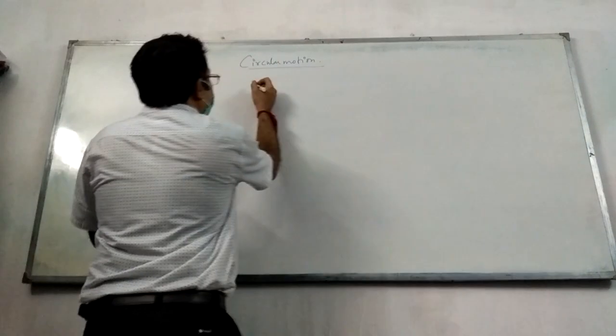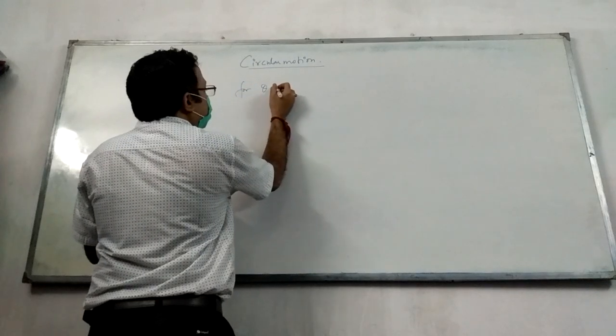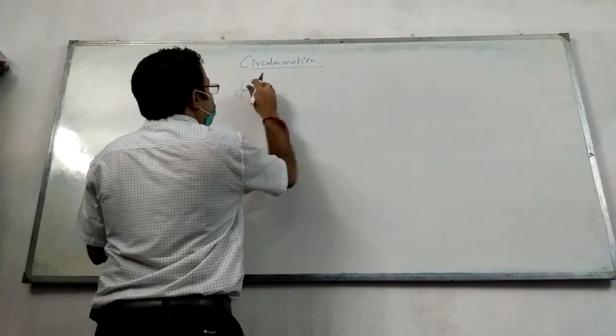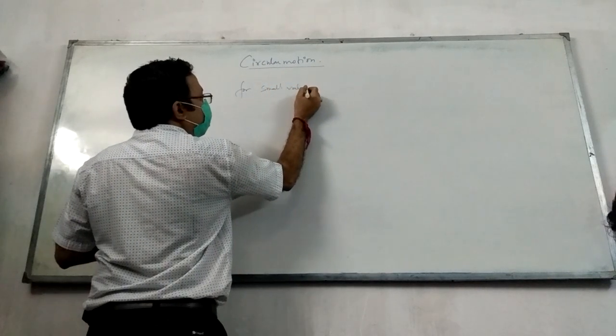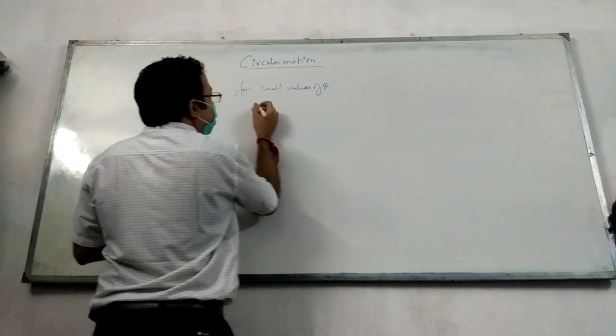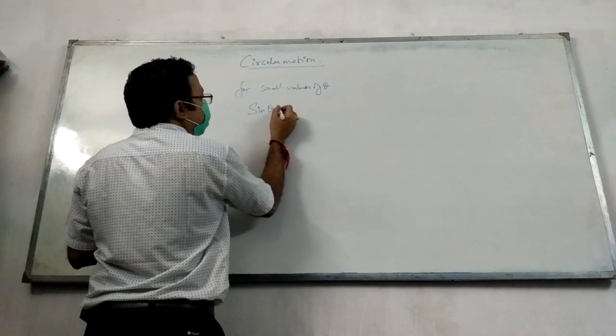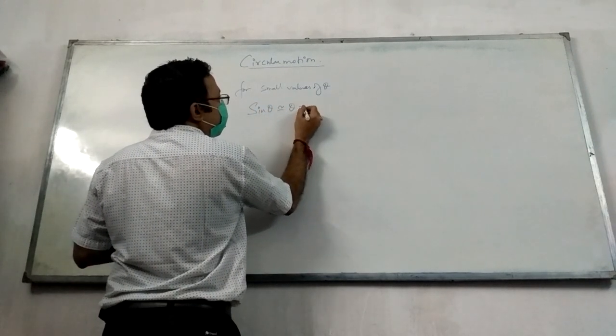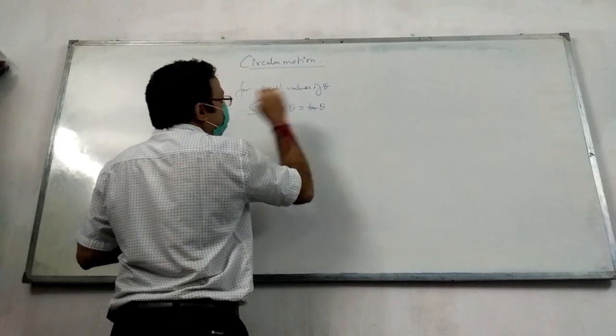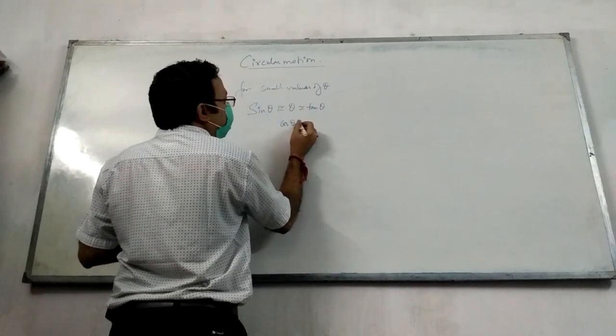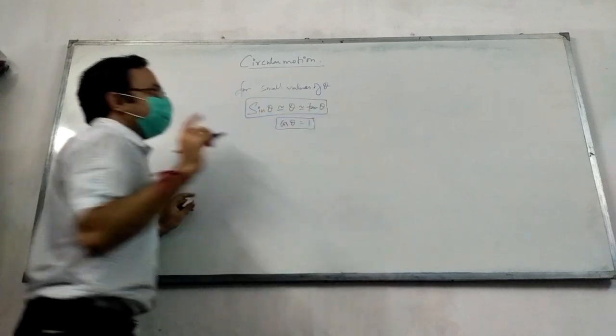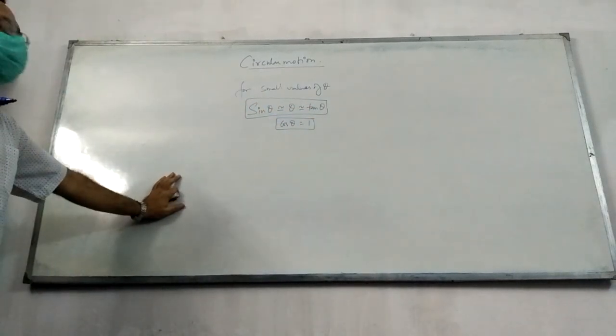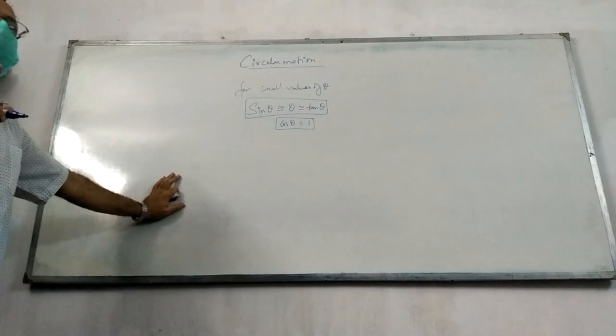The relation is for theta, small value of theta, small values of theta. You can write sin theta is nearly equal to theta is nearly equal to tan theta, and when theta is small, cos theta becomes 1. Theta is small, sin theta is nearly equal to theta is equal to tan theta and cos theta is small.